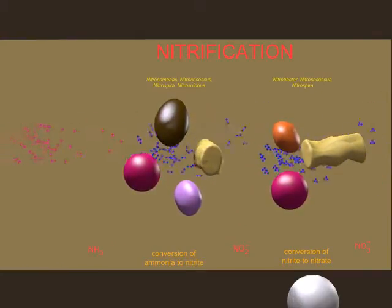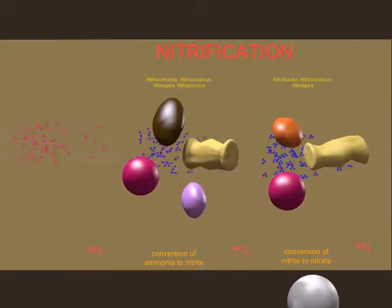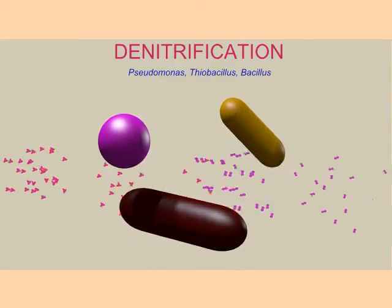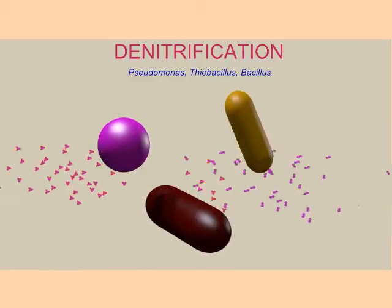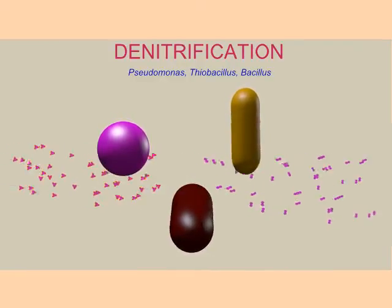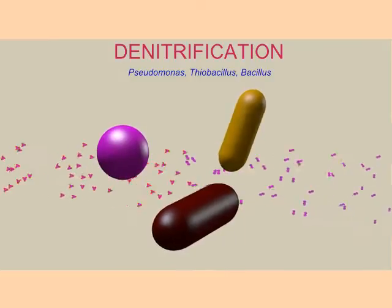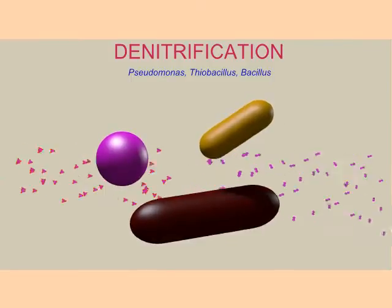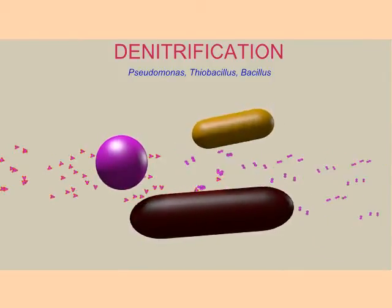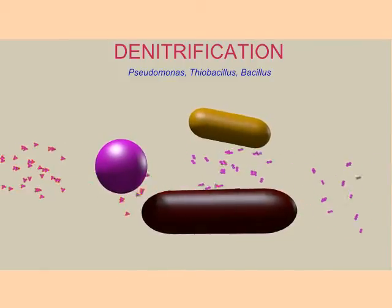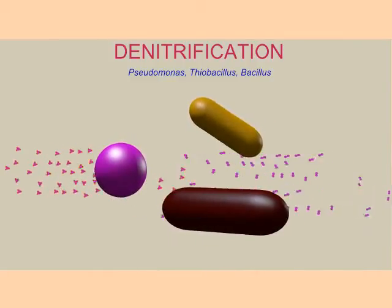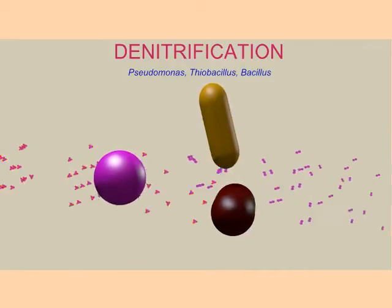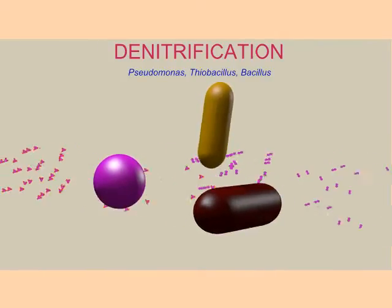These bacteria tend to live in soil, water, and can be found in sewage. Nitrates can be taken up by plants and incorporated into the biomolecules of the plants, and animals, when they eat the plants, can then incorporate nitrogen into their biomolecules. When plants and animals die, the nitrogen from the dead material can be converted to ammonia and then reprocessed to make nitrates again. Or it can undergo denitrification through bacteria such as Pseudomonas, Thiobacillus, and Bacillus, where it is returned to nitrogen gas in the air.